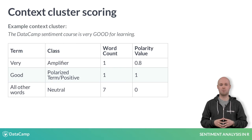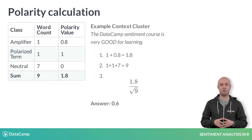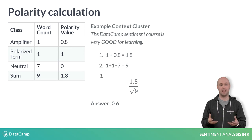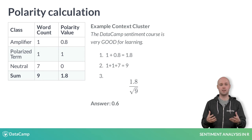In the polarity function, an amplifier like 'very' is valued at 0.8, while de-amplifiers receive a negative 0.8. In the end, all the polarity values are summed. Keep in mind, we didn't remove any stop words, so the entire passage has nine terms. The word 'good' counts as one, and the amplifier 'very' adds another 0.8. So the polarity is 1.8, with the total word count of nine. Then 1.8 is divided by the square root of nine — thus 1.8 divided by three — so the polarity score is 0.6.